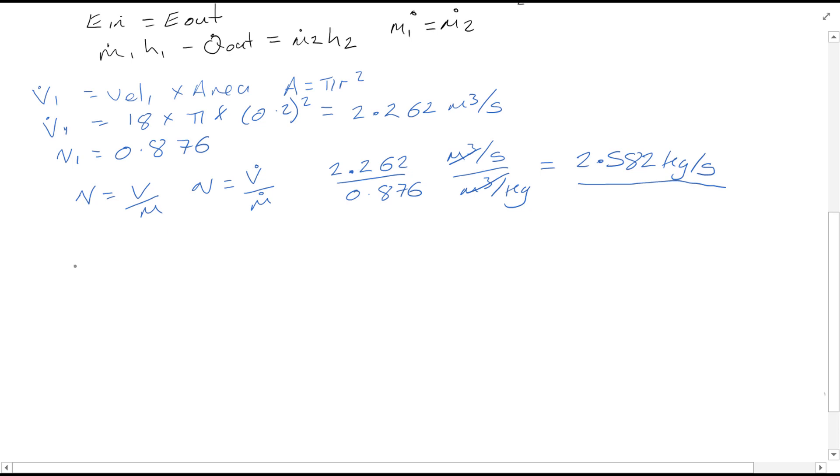Since we worked out the energy balance, we know that M1 H1 minus Q out equals M2 H2. Q out equals M1 H1 minus M2 H2. But remember M1 equals M2, which is just equal to M, so we can simplify this down considerably. Q out is equal to M dot times (H1 minus H2).